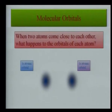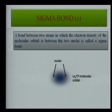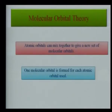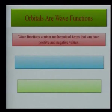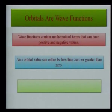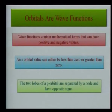In molecular orbital theory, when two atoms come close, their atomic orbitals mix to form molecular orbitals. Orbitals are wave functions that can have positive or negative values. The two lobes of P orbitals are separated by a node and have opposite signs. Molecular orbital formation occurs only when the signs of wave functions are the same — this does not mean repulsion; it refers to the symmetry of the wave function. The sign of the wave function does not indicate repulsion.